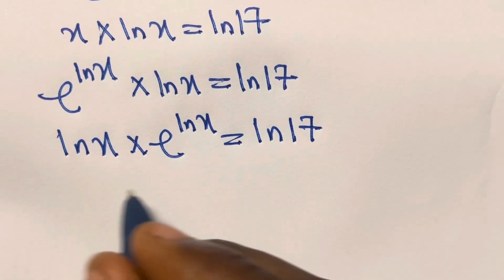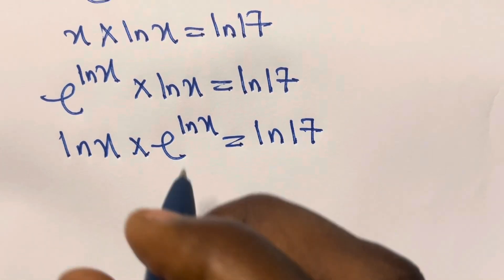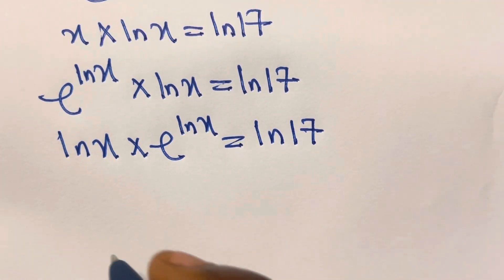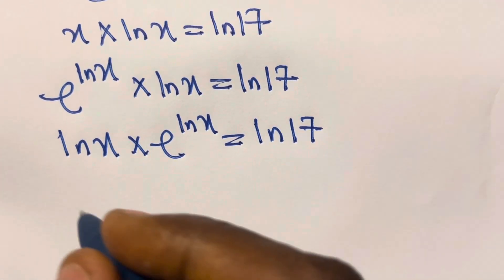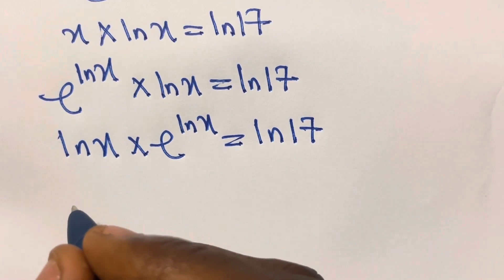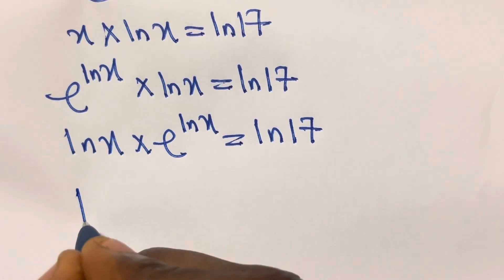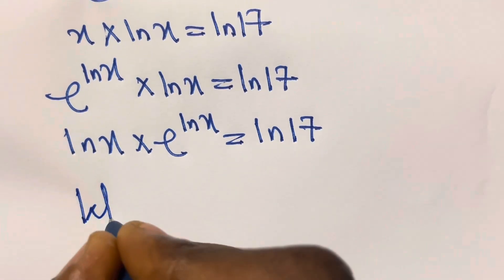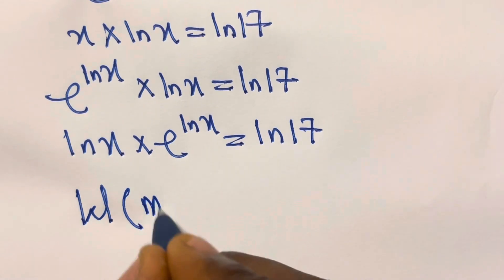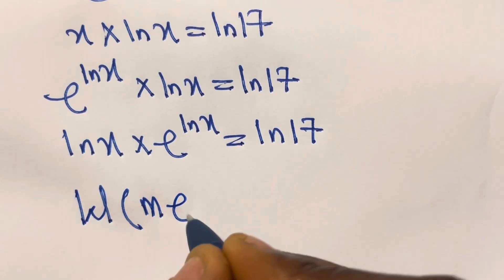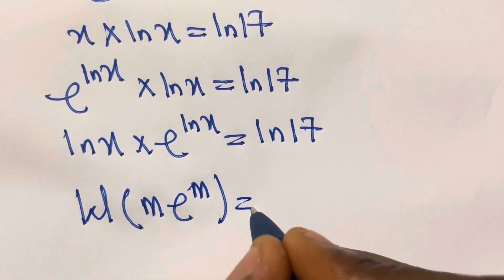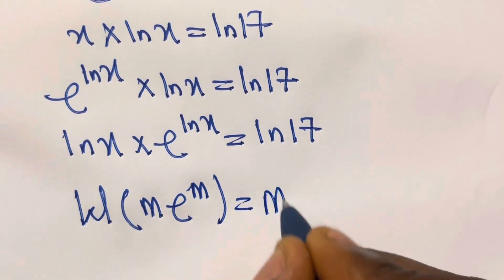So if we multiply these, we have ln x multiplied by e raised to the power ln x equals ln 17. Now we take the Lambert W function of both sides. You should know that the Lambert W function of m times e raised to the power m equals m.